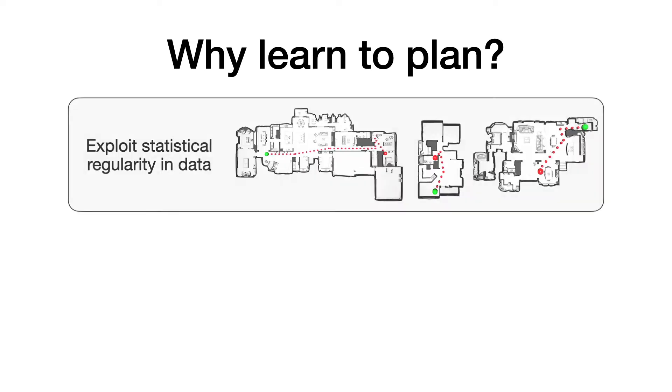There are two key reasons. First, the world consists of many statistical regularities. For example, walls are mostly parallel or perpendicular to each other and the furniture is aligned with the walls. Classical methods do not capture these regularities because they optimize a plan from scratch for each new setup.